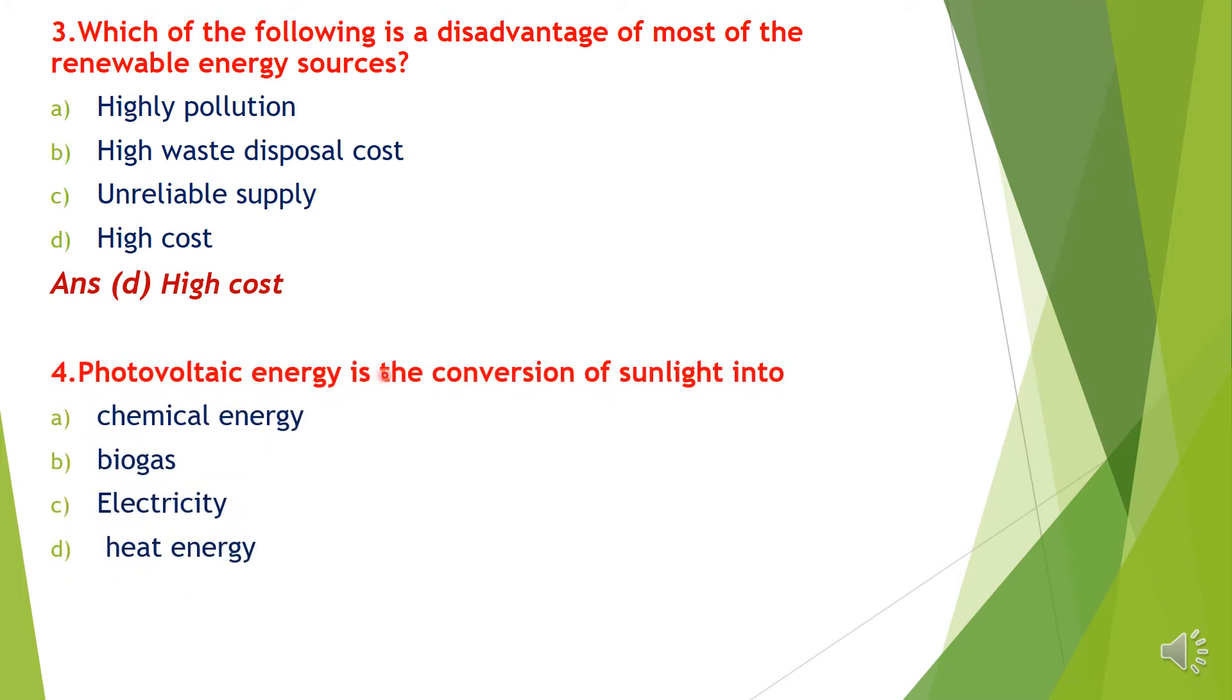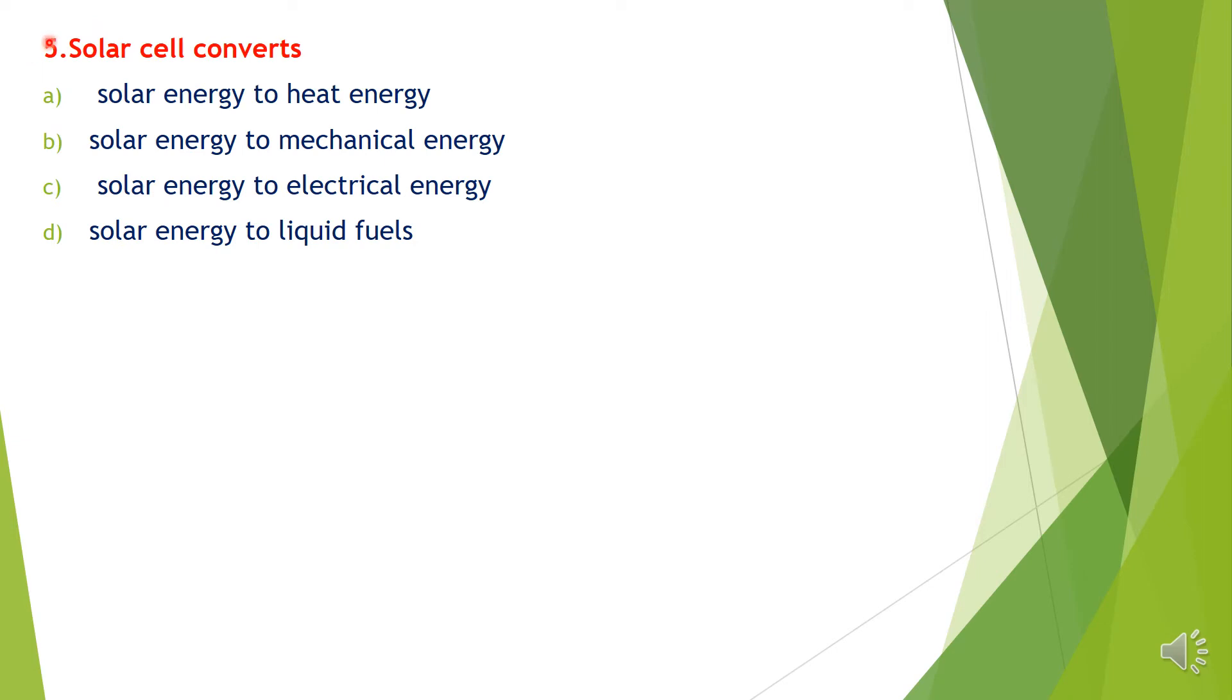Question 4. Photovoltaic energy is a conversion of sunlight into: A. Chemical energy, B. Biogas, C. Electricity, D. Heat energy. Option C, Electricity.